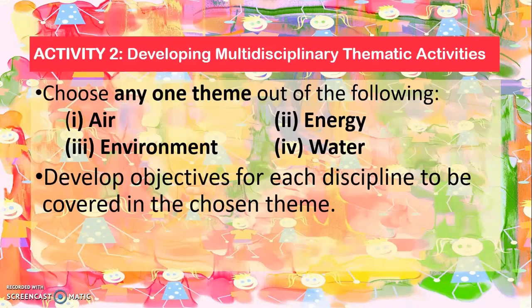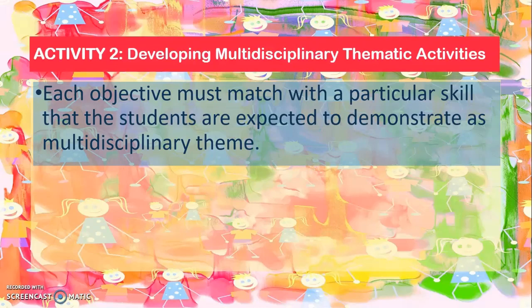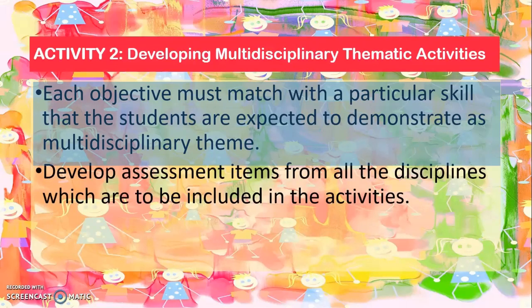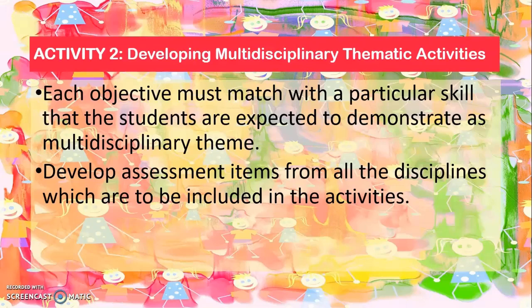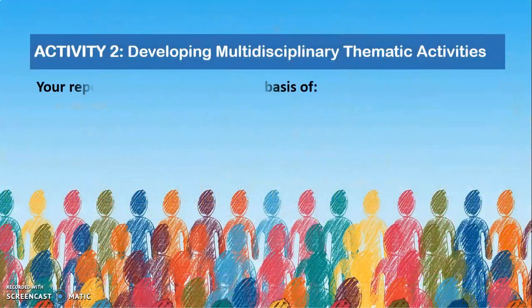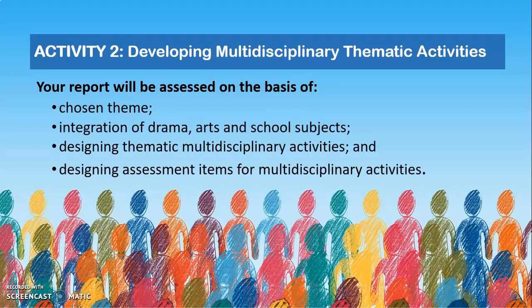You then develop objectives of each discipline to be covered in the chosen theme. For example, if you have chosen the theme water, you identify what the objectives should be for dealing with that theme in science, social science, literature, and mathematics. You also match the objectives with the particular skills students are expected to demonstrate as a multidisciplinary theme. Then develop some assessment items for all the disciplines included in these activities. Your report will be assessed on the basis of the theme chosen, how you integrated drama, art, and school activities, whether you designed thematic multidisciplinary activities, and what kind of assessment items you designed to assess those activities.